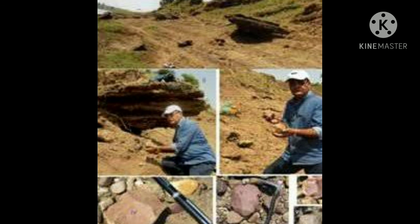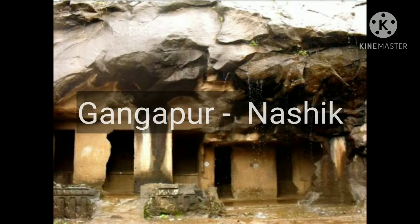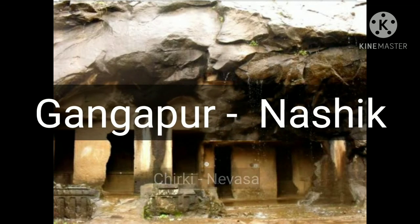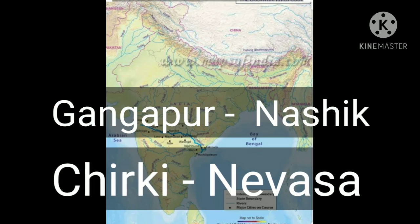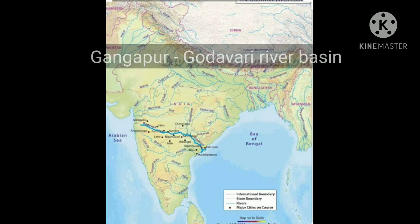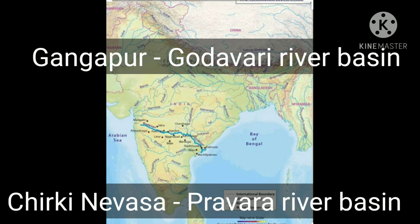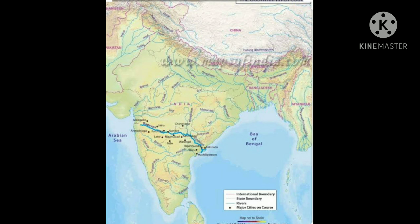Gangapur near Nashik and Chirki Nevasa near Nevasa are among the well-known Old Stone Age sites in Maharashtra. Gangapur is on the banks of the Godavari River and Chirki Nevasa is in the Pravara Basin. The remaining part of the lesson will be covered in the next video. Till then, bye!